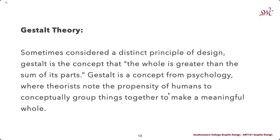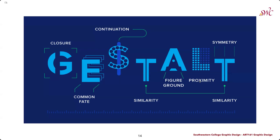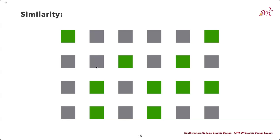Gestalt theory is a way of thinking about the concept that the whole is greater than the sum of its parts. Gestalt is a concept borrowed from psychology where theorists note the propensity of humans to conceptually group things together to make a meaningful whole. Humans really tend to think about things as the larger whole rather than individual parts. There are multiple principles here: closure, common fate, continuation, similarity, figure-ground, proximity, and symmetry. In all of these, you're not focusing on the individual elements — you're looking at the whole and how we solve the visual problem as a viewer.